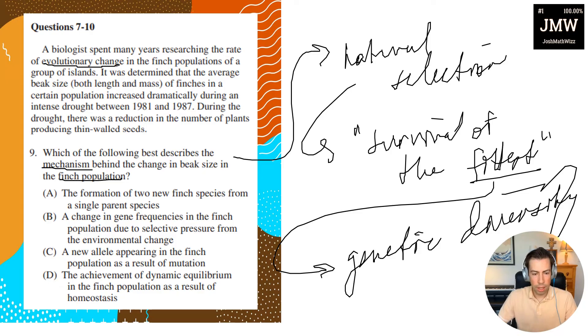So let's look at our answer choices. Answer choice A: The formation of two new finch species from a single parent species. So this is not possible, right? At least I don't think it's possible. Yeah, this is like a speciation event that happens after two offspring are created, which is just impossible. So A is out. B: A change in gene frequencies in the finch population due to selective pressure from the environmental change. Yeah, this one looks pretty good, right? We're talking about gene frequencies changing, selective pressure, right? These are all terms that we would expect for natural selection.